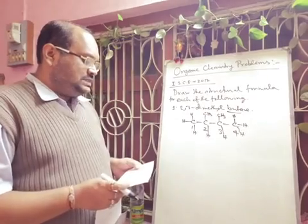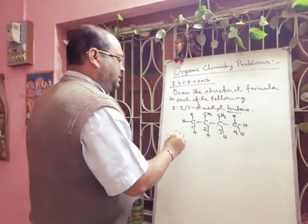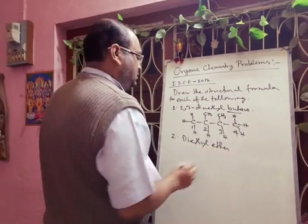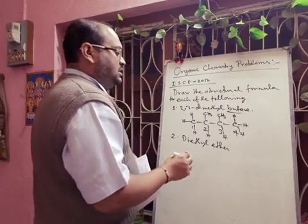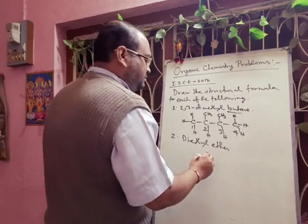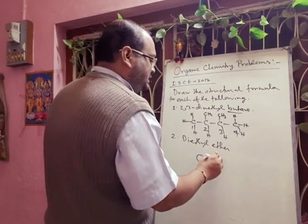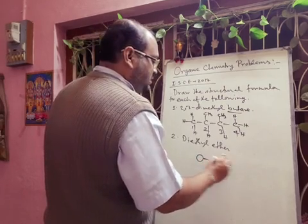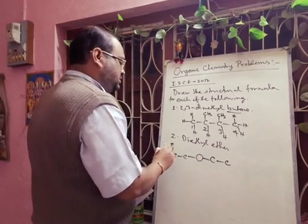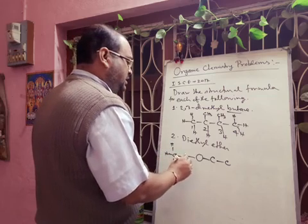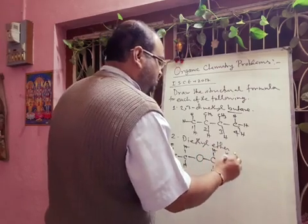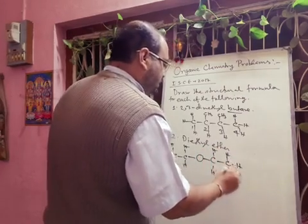Next one is diethyl ether. Ethyl means both sides there will be the alkyl group — one side ethyl is there and another side ethyl is there. The valency of the carbon will be satisfied by hydrogen. So this is the structure of diethyl ether.